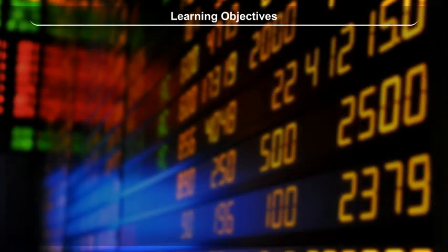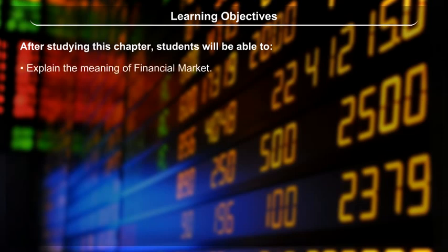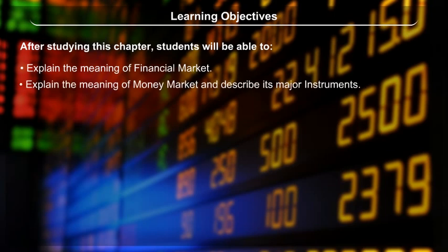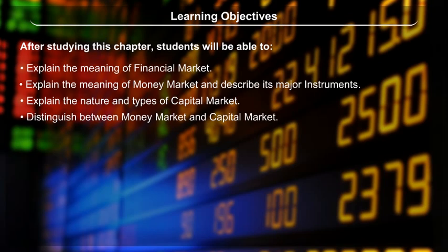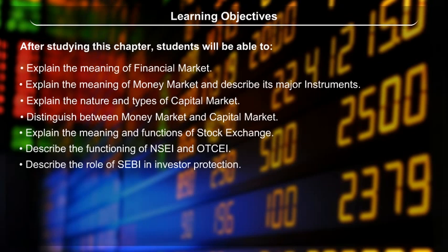Learning Objectives: After studying this chapter, students will be able to explain the meaning of financial market, explain the meaning of money market and describe its major instruments, explain the nature and types of capital market, distinguish between money market and capital market, explain the meaning and functions of stock exchange, describe the functioning of NSEI and OTCEI, and describe the role of SEBI in investor protection.